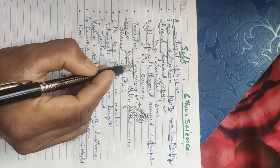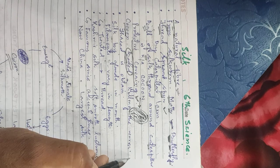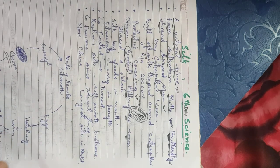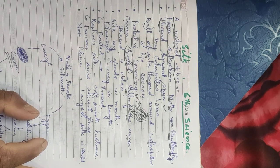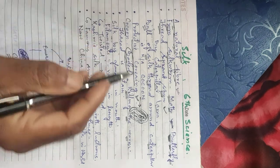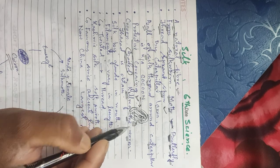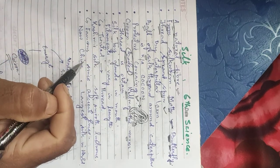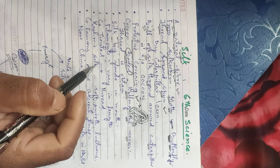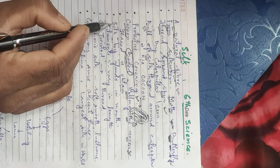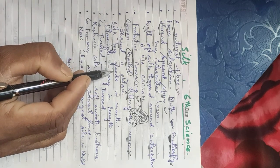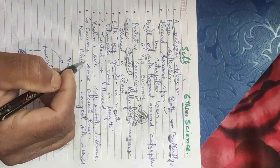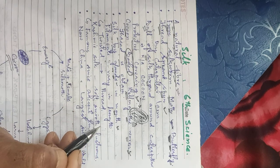To extract the silk thread, you boil the cocoons in water. This process kills the pupa inside and allows the cocoon to be unwound. The cocoon is then carefully unraveled to obtain the solid silk thread.